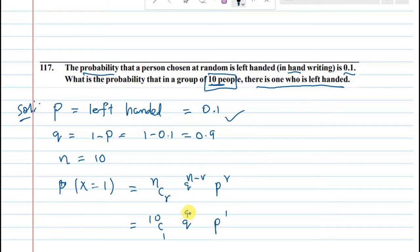When we have nine members who are not left-handed, we have 10 C 1, 0.9 power 9, p is 0.1. 10 times 0.1 divided by 2 multiplied by 1, answer is 9. This is done.